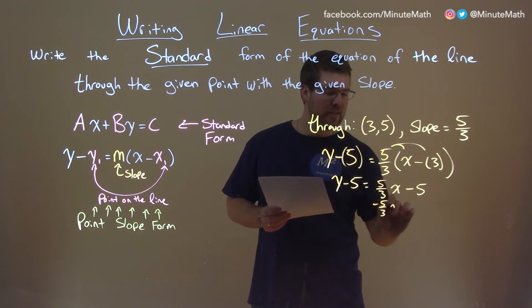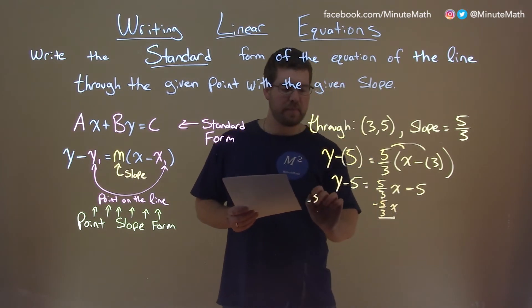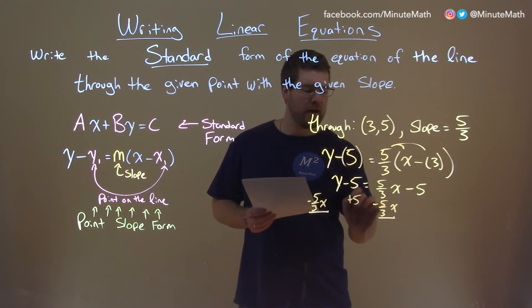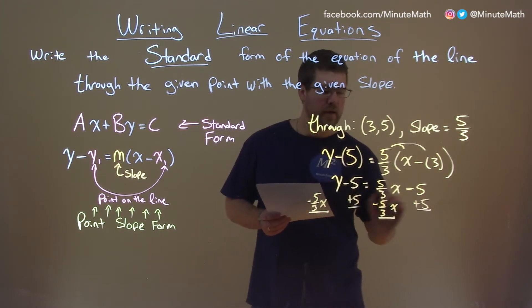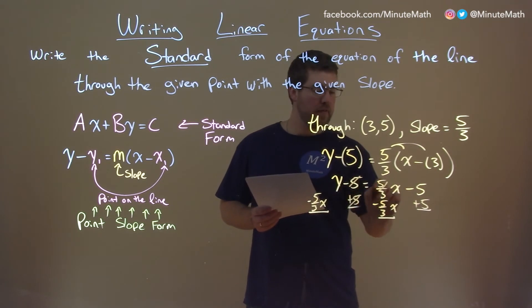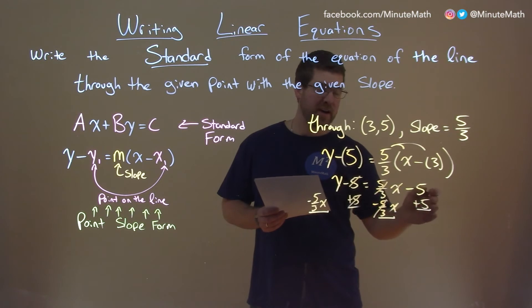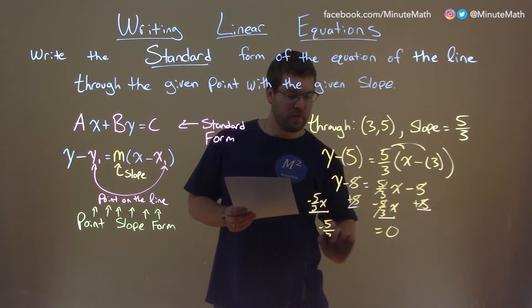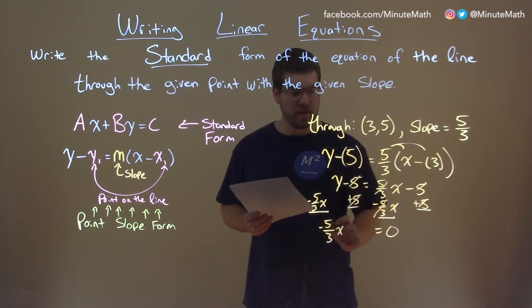So we subtract 5 thirds x here to both sides, and then we add a 5 to both sides. These 5 cancels, these 5 thirds cancel with the x's, and negative 5 plus 5 also cancels. So we have a 0 on the right, and we have minus 5 thirds x on the left plus y equals 0.